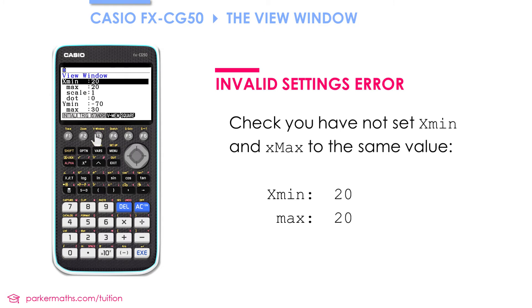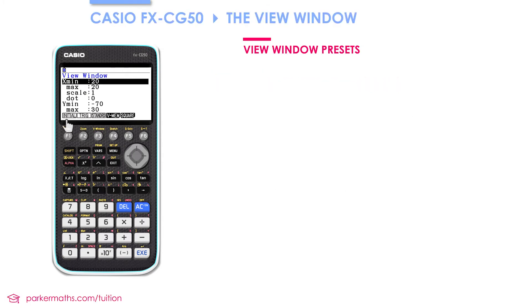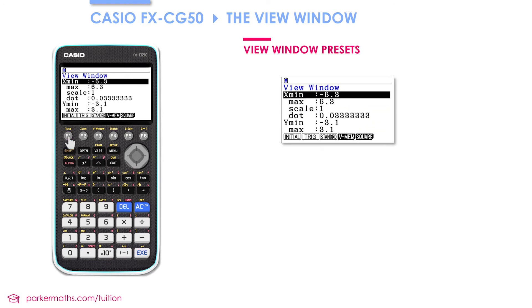And while we're in this menu, I'd just like to show you the three presets that you might sometimes use when plotting one of these graphs. If I press initial, then it sets my xmin to -6.3 and the max to 6.3, and the ymin to -3.1 and the ymax to 3.1. That's often a good starting point for many typical graphs. If I press standard, then it sets them to -10 and 10.